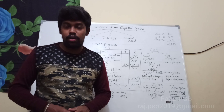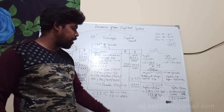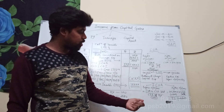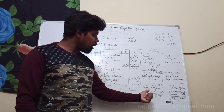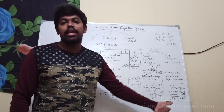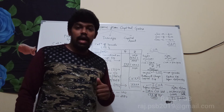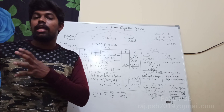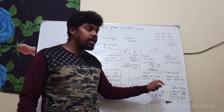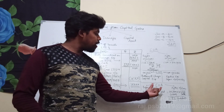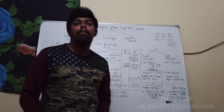For assets purchased before 1/4/2001: the index cost of acquisition is calculated as cost of acquisition multiplied by CII of the year of sale, divided by CII of the base year (1/4/2001).